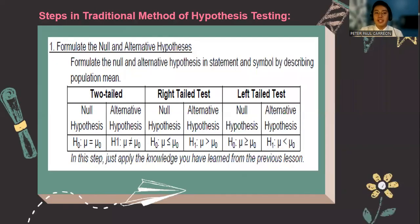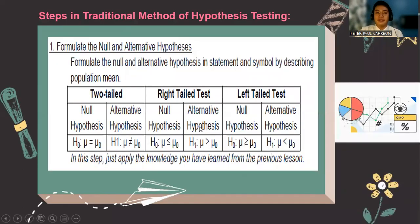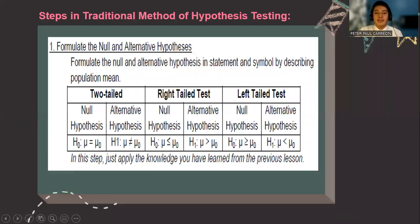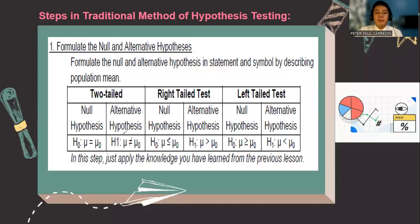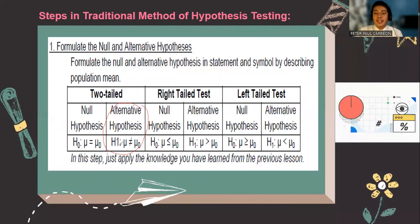Here are the steps in solving the traditional method. First, we formulate the null and the alternative hypothesis. Remember that you always start with the alternative hypothesis. If you are not interested with either a greater than or a less than, then you use a not equal symbol and then the equal sign to indicate that there is non-directional in the test.